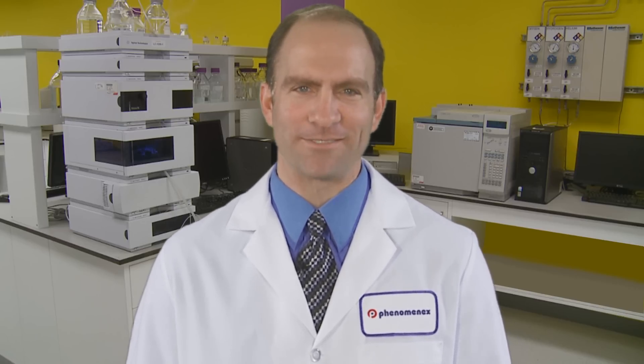Before we start, let's get familiar with the parts of your cool lock nut. Your cool lock nut has three main sections: the locking nut with ferrule, the main body, and the upper ferrule.